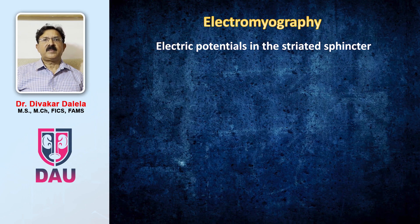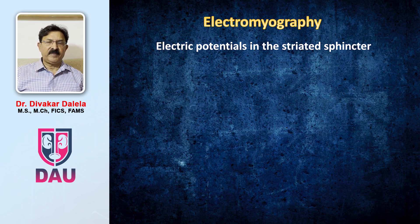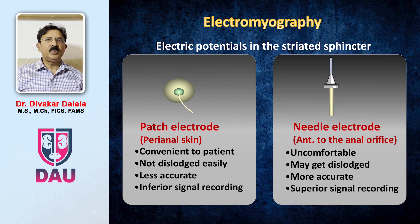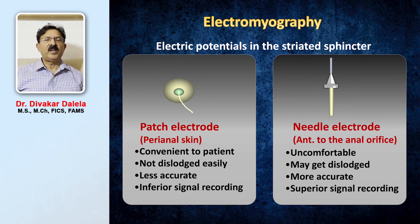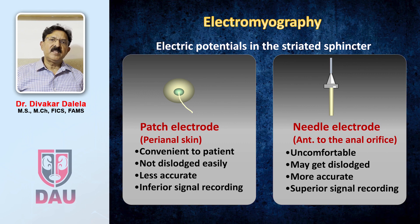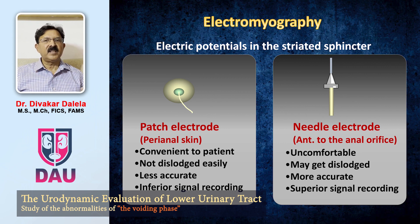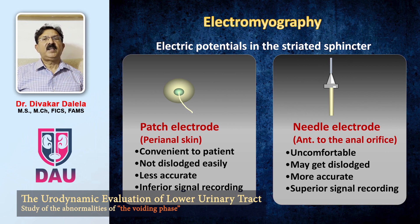In some patients of bladder outflow obstruction where you suspect abnormalities of the sphincter muscles, particularly the external sphincter muscles, you will need an electromyography. You can apply a patch electrode around the anal verge to record sphincter activity, but better is to use a needle electrode inserted through the skin close to the anal orifice and into the external sphincter muscle. The patch electrode is more convenient and not dislodged during the study, but less accurate with inferior signals. The needle electrode is uncomfortable and may get dislodged, but gives very accurate recording of muscle activity and superior signal quality.